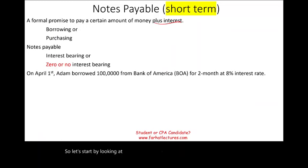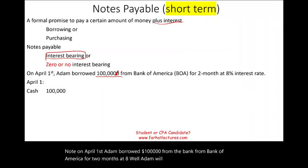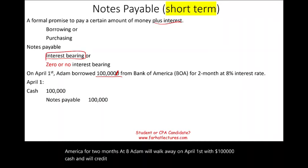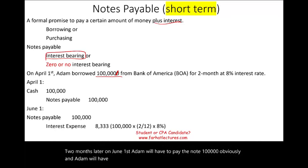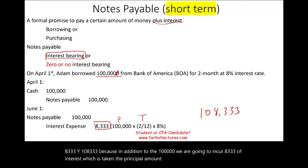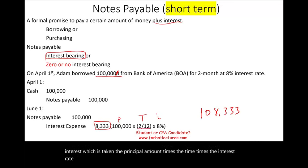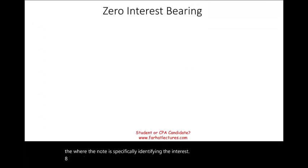Let's look at an interest-bearing note example. On April 1st, Adam borrowed $100,000 from Bank of America for two months at 8%. Adam receives $100,000 cash and credits notes payable $100,000. Two months later, on June 1st, Adam pays back $100,000 principal plus $1,333 of interest (calculated as $100,000 × 8% × 2/12), for a total cash payment of $101,333.